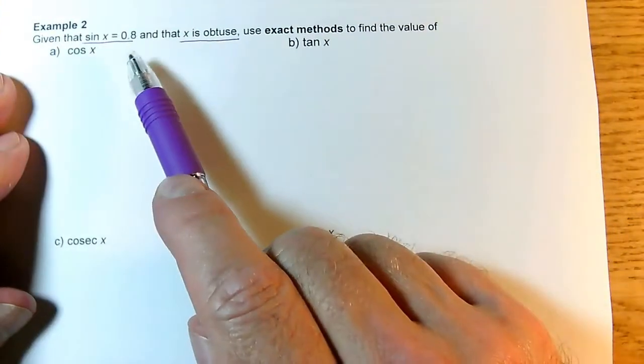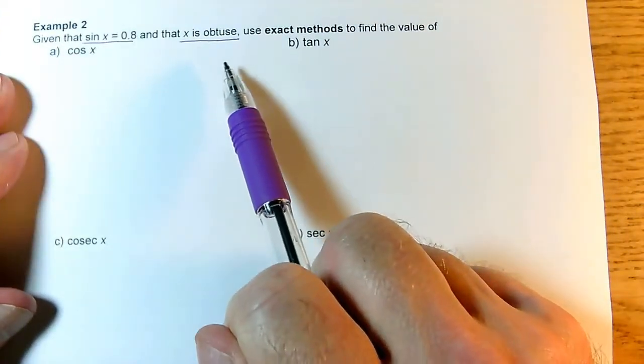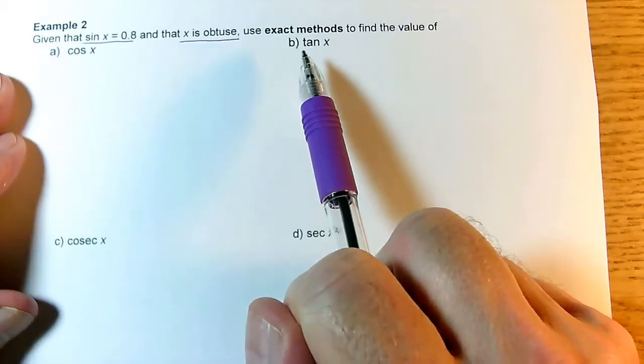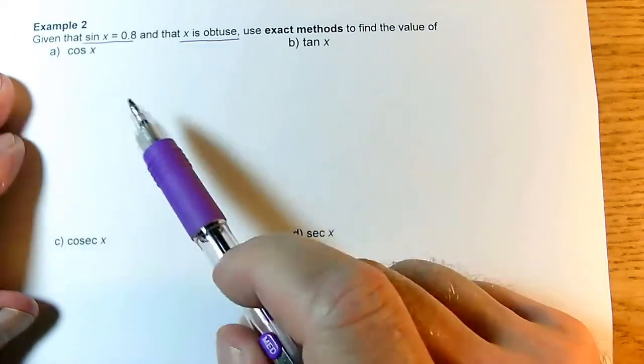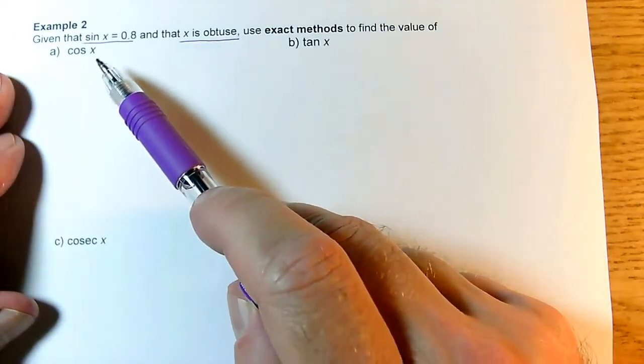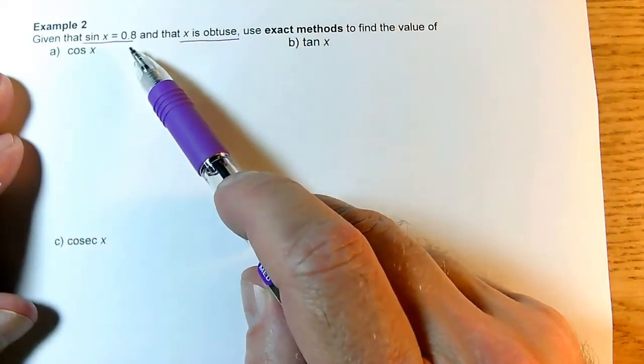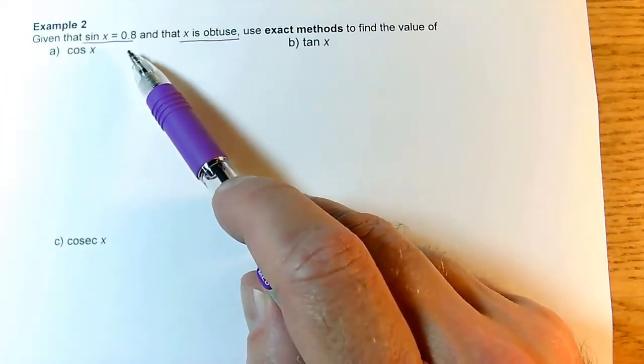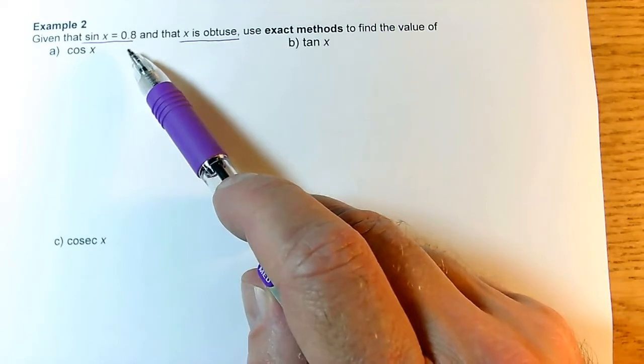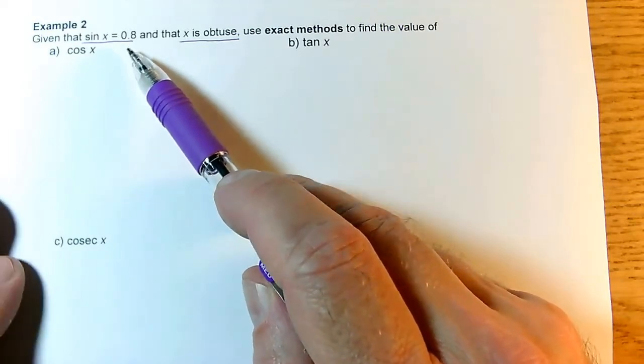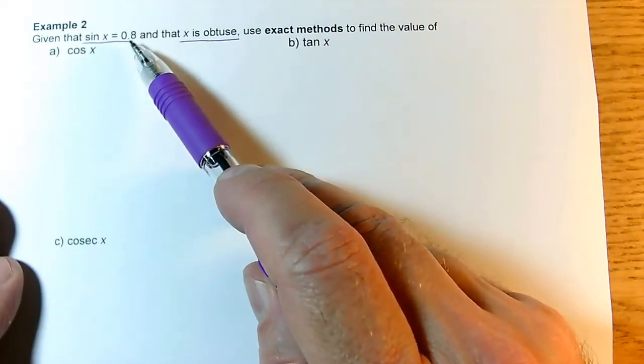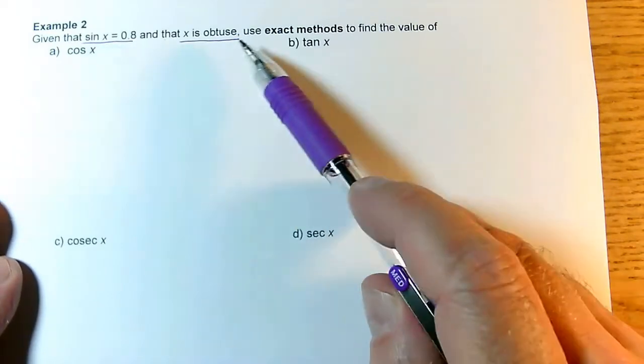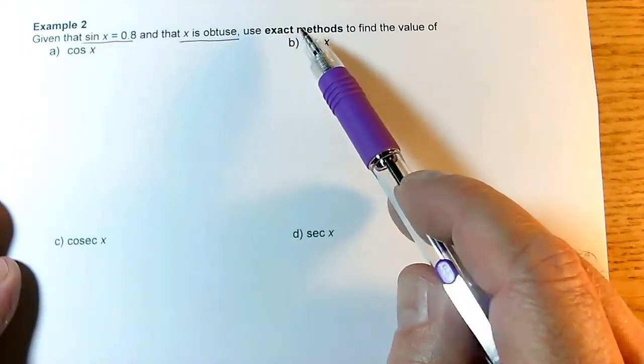In this question, we've got that sin x is 0.8, x is obtuse, and we need to use exact methods to find some other values. Your first instinct might be to use inverse sine of 0.8, but that will give you a horrible decimal answer, and we're told we have to use exact methods.